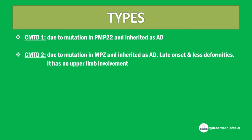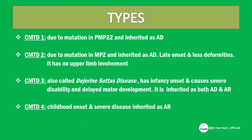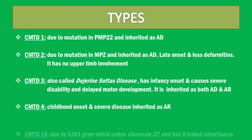CMT2 has late onset and less deformities, with no upper limb involvement. CMT3, also called Dejerine-Sottas disease, has infancy onset and causes severe disability and delayed motor development; it is inherited as both autosomal dominant and recessive. CMT4 has childhood onset, severe disease, and is inherited as autosomal recessive.